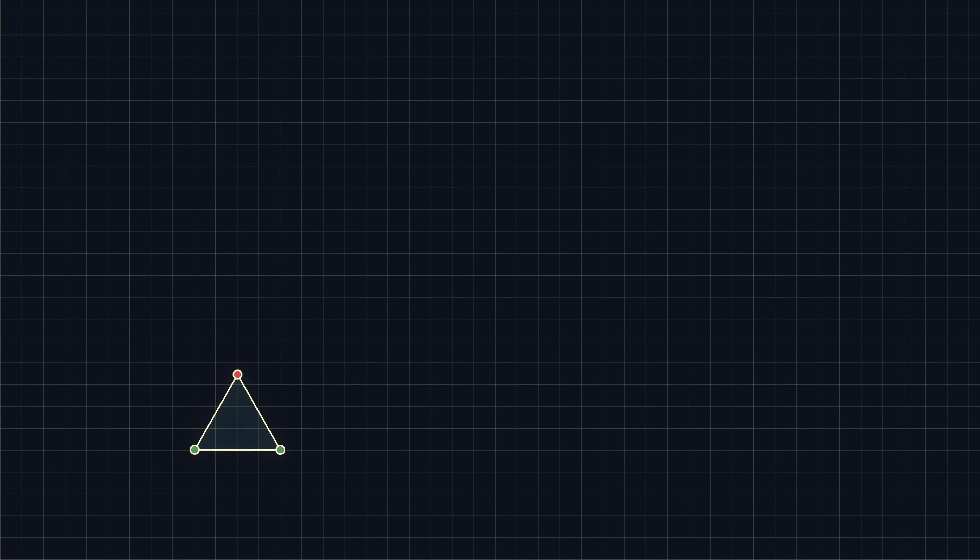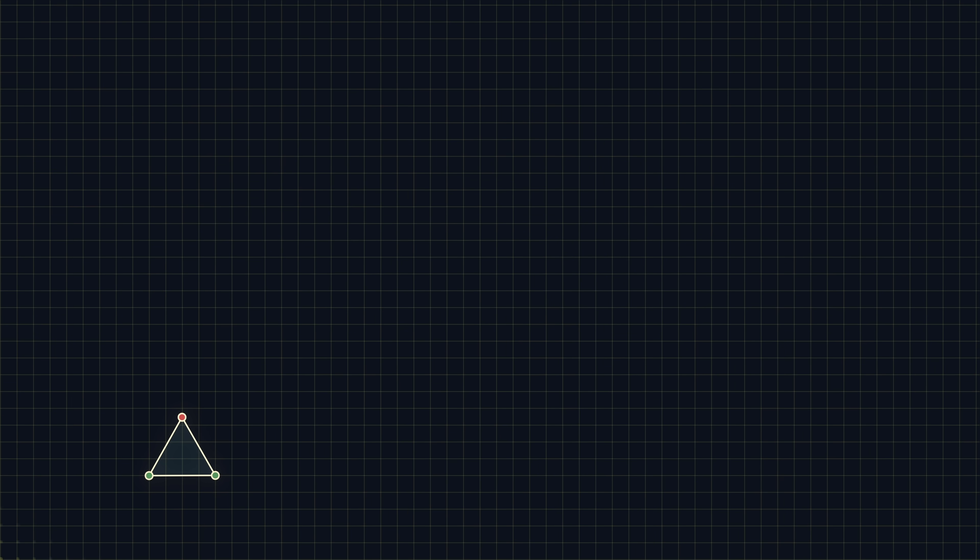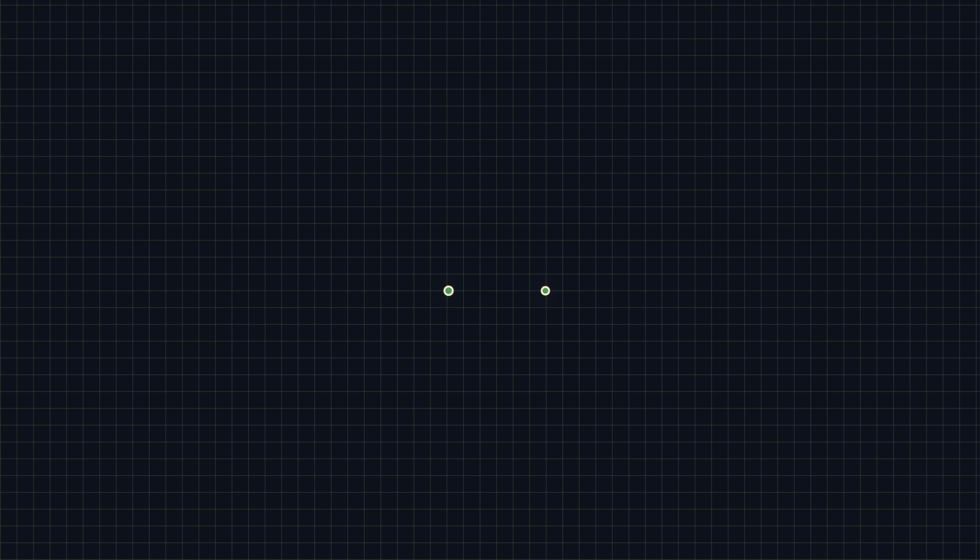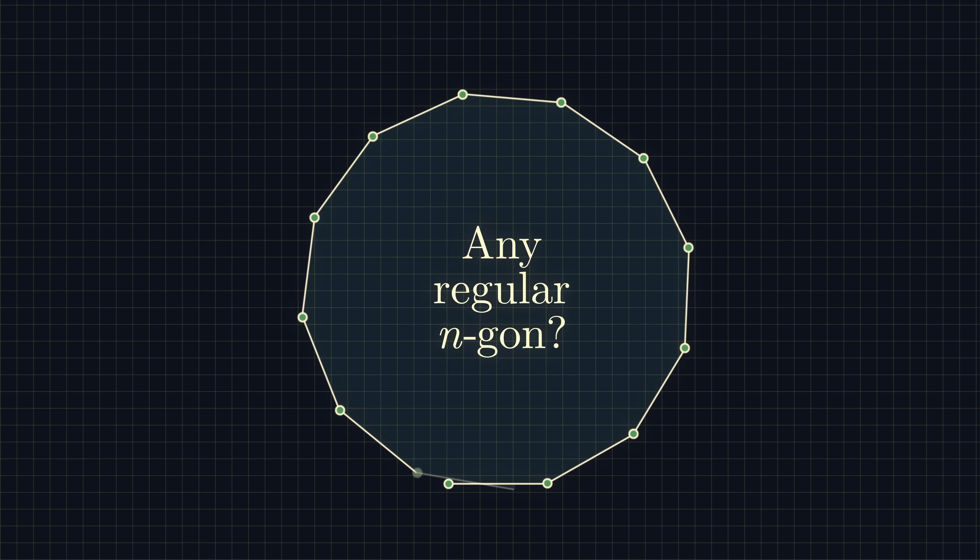Perhaps you might think this is only because the shapes we're drawing tend to be quite small. If we have an infinite grid with infinitely many integer lattice points, surely we can find three of them to make an equilateral triangle. And for a matter of fact, surely we can find n points which form a regular n-sided polygon, right?